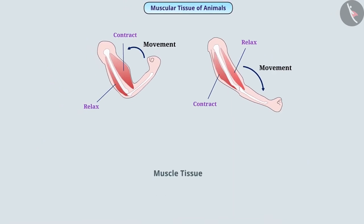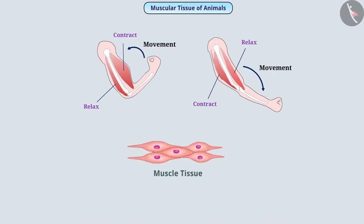The muscle tissue is made up of long cells. These cells are called muscle fibers. Muscles contain a special type of protein, which is called contractile protein. This protein contracts and relaxes, causing movement of organs.